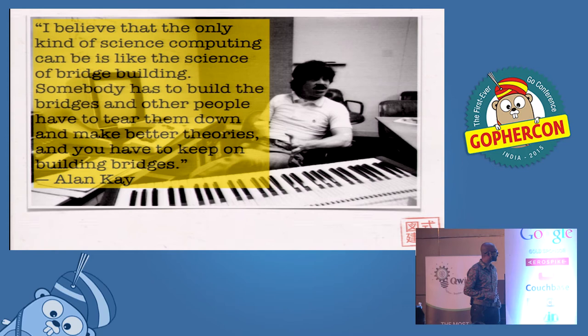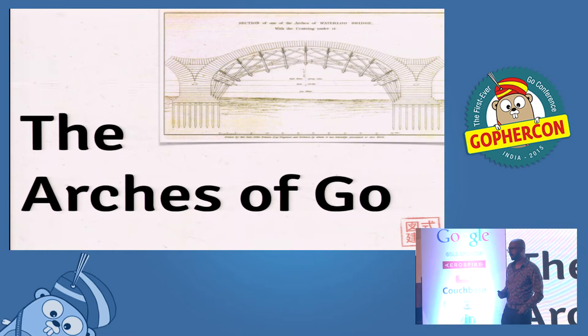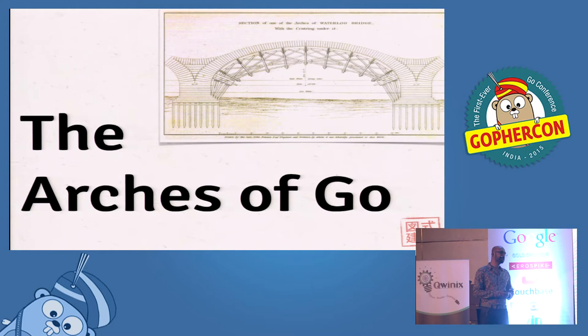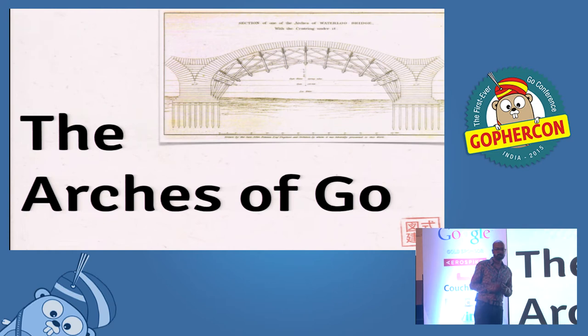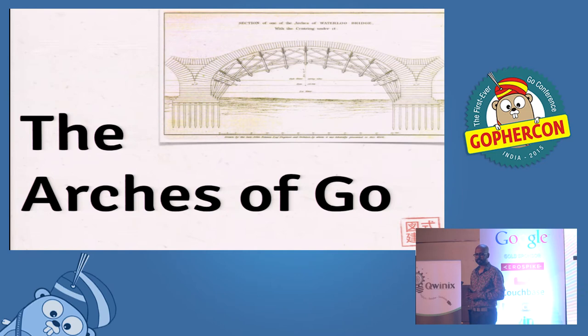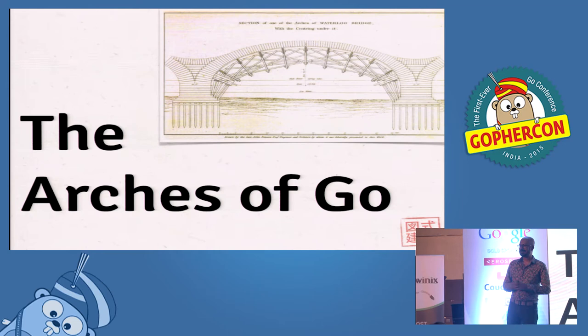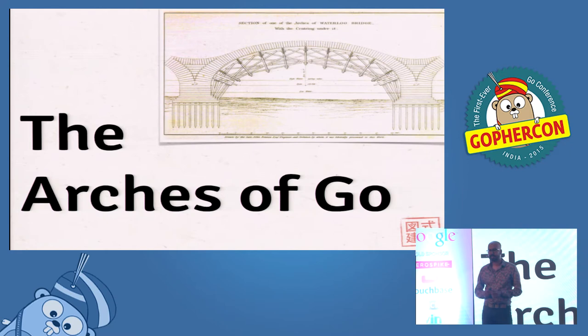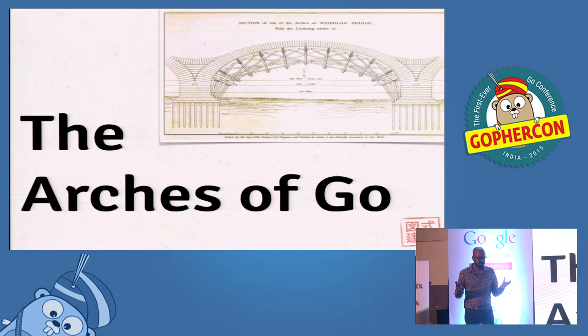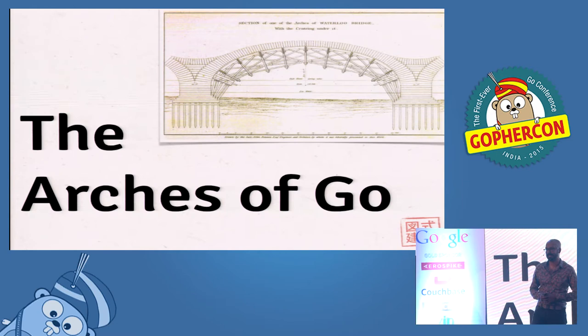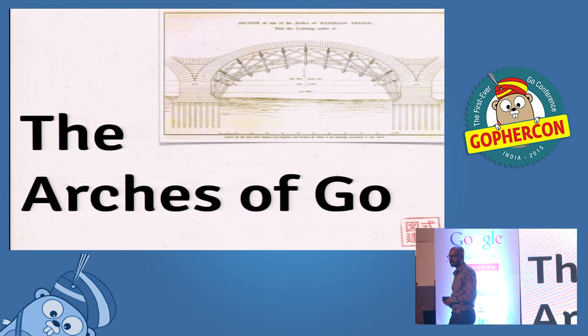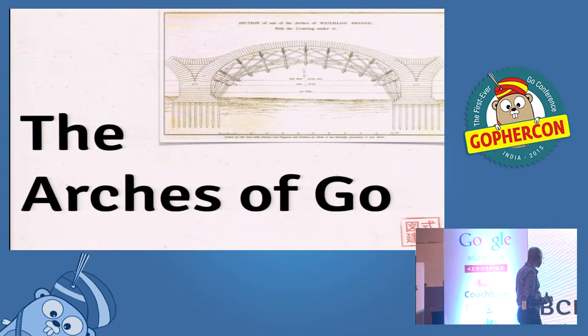I'll be talking about the arches of Go. If you think about Go the language as a very nice structure, it is built on top of many, many arches which predate Go by decades, if not more. One pop quiz: how old is Go as a language? Five, six, eight years? I would wager that Go is at least 30 to 45 years old, because there are some key underpinnings in the language which date back to the 60s and 70s. And I hope to illustrate those core ideas which live in Go even today.